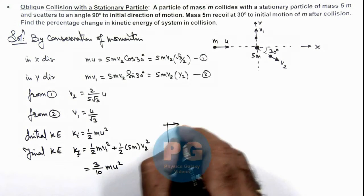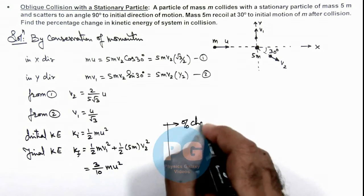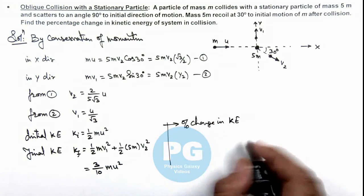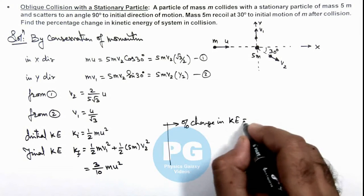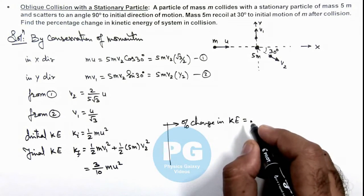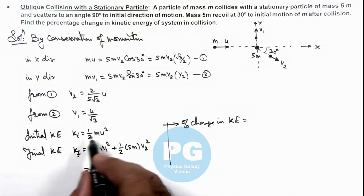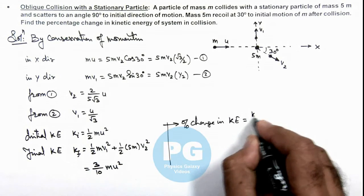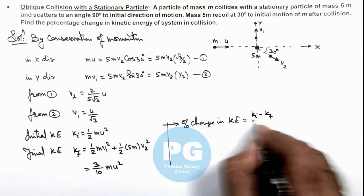So if we have got initial and final kinetic energy, then we can write percentage change in kinetic energy in this collision can be given as initial minus final by initial, so this will be (KE_i - KE_f)/KE_i.